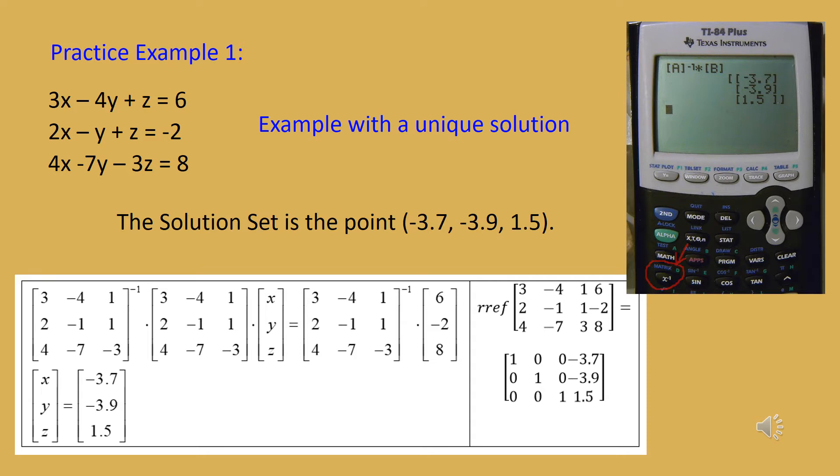The same calculation can be completed in the decimals matrix calculator, and if there's not a unique solution, you'll get an error message because the inverse of the coefficient matrix would not exist. We can also use row reduced echelon form by making the three by four augmented matrix with the six, negative two, eight column. When you have one unique solution, the coefficient matrix RREFs to the identity matrix, and you read x equals negative 3.7, y equals negative 3.9, z equals 1.5.